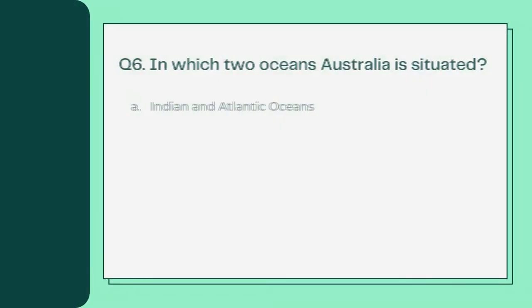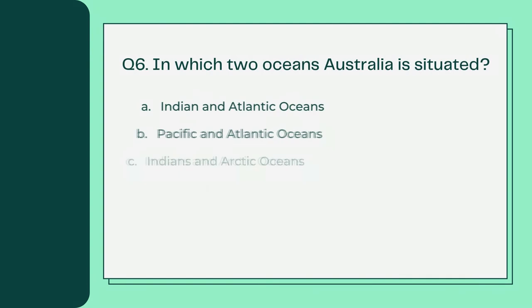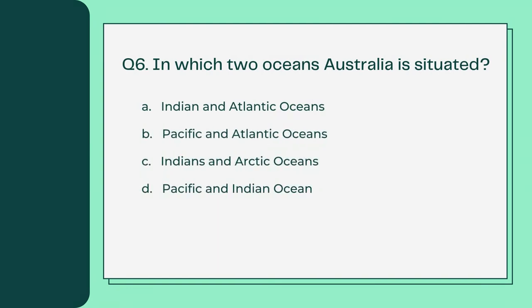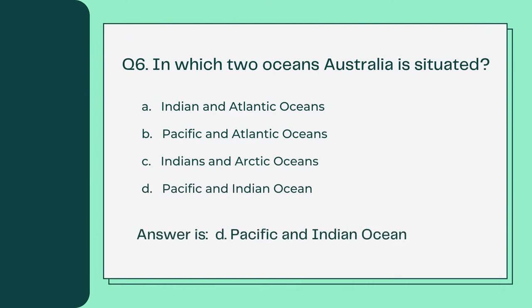In which two oceans is Australia situated? A. Indian and Atlantic Oceans B. Pacific and Atlantic Oceans C. Indian and Arctic Oceans D. Pacific and Indian Ocean. Answer is D. Pacific and Indian Ocean.